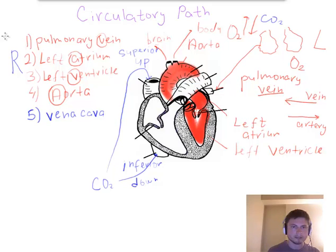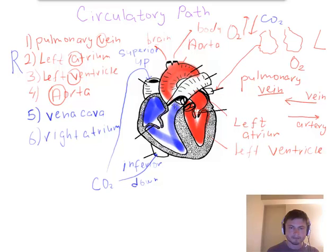It goes inside the vena cava, then it goes inside the right atrium. From atrium, it goes inside the other V, which is your right ventricle.